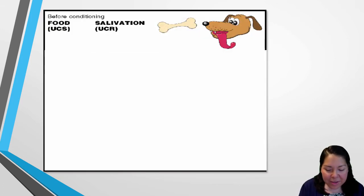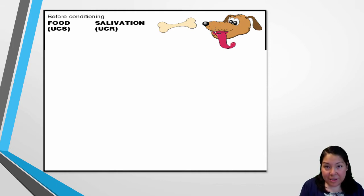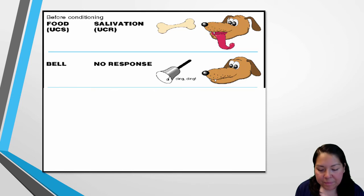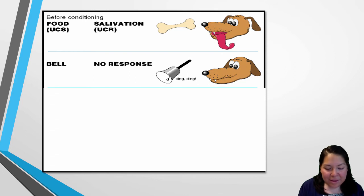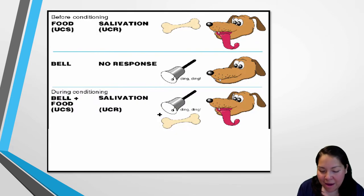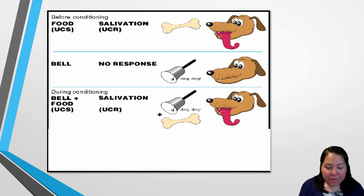Looking at an illustration of this process: before conditioning, our dog Spike salivates at the sight of food — food is the unconditioned stimulus causing the unconditioned response of salivating. When we ring a bell, the neutral stimulus, nothing happens; Spike just looks at us wondering what we're doing. During conditioning, when we pair the bell with food over many trials — say twice a day for ten days — Spike learns that when you ring the bell, food is coming, and he automatically starts to drool.